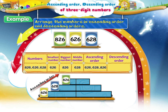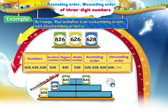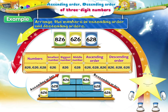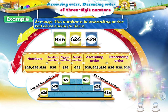Starting from the biggest number, the descending order will be 826, 628 and 626. Good job, Starry!